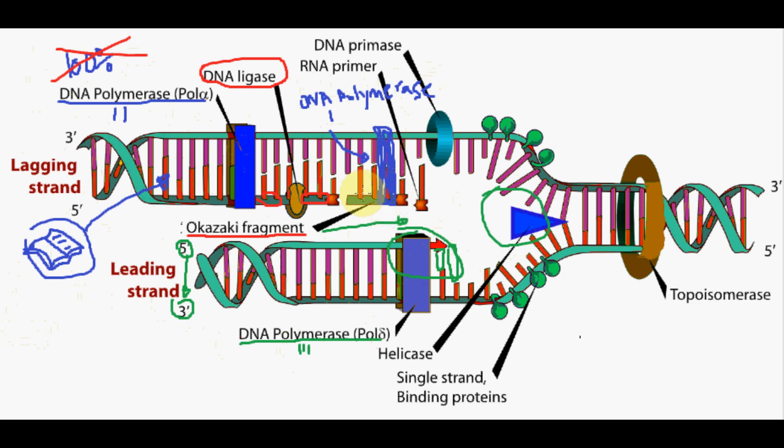The DNA polymerase 1 is an enzyme that removes the RNA primer and fills the gap between the Okazaki fragments on the lagging strand of DNA with nucleotides. The polymerase also proofreads newly synthesized DNA.